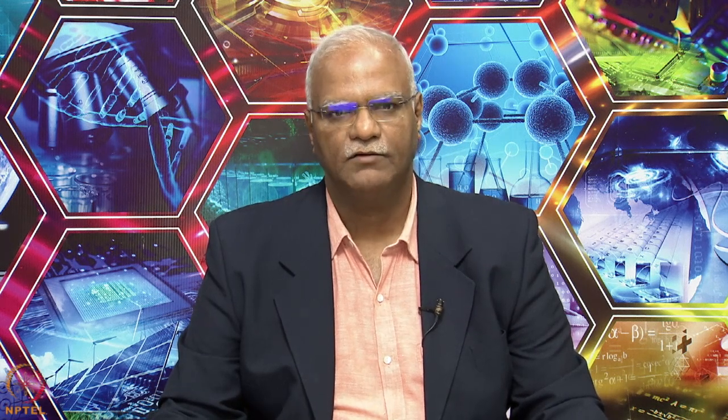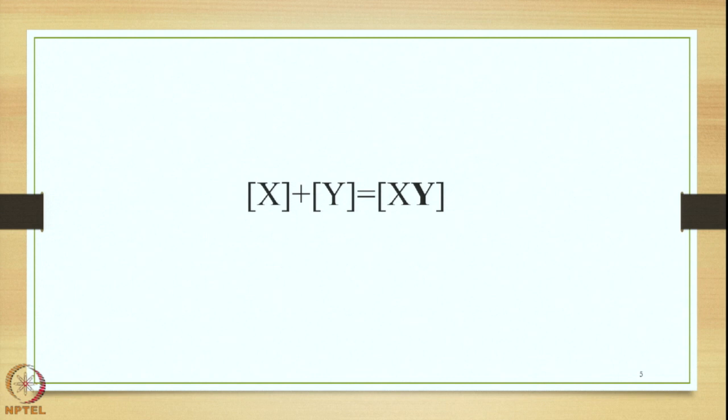The features of the Tatpurusha Samasa can be shown in the form of an equation mentioned on this slide, where we have X and Y, two independent words and separate elements. X and Y are thought to be merged together by the speaker of Sanskrit, and then the compound processing takes place and an output is generated in the form of X+Y. This X+Y is one unit in terms of meaning, word form, and accent — Aikarthya, Aikapadhyya, and Aikaswarya — visible on X+Y as one unit.